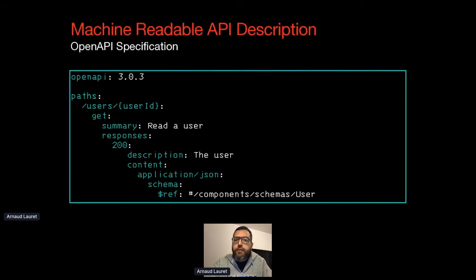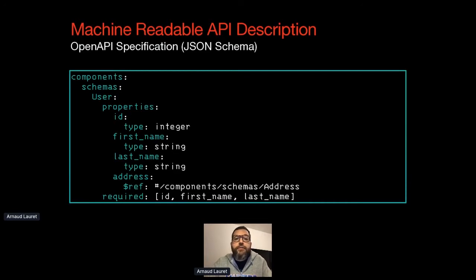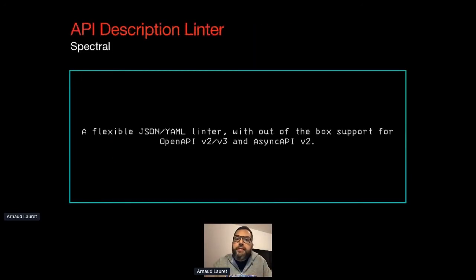The OpenAPI Specification, formerly known as the Swagger Specification, is a standard and programming-language-agnostic REST API description format. An OpenAPI document can be either in JSON or YAML format. It describes API resource paths, operations, response bodies, and anything else you need to describe data. The OpenAPI Specification relies on JSON Schema, which allows you to define, for example, that a user object is composed of mandatory id, first name, and last name properties, plus an optional address property.